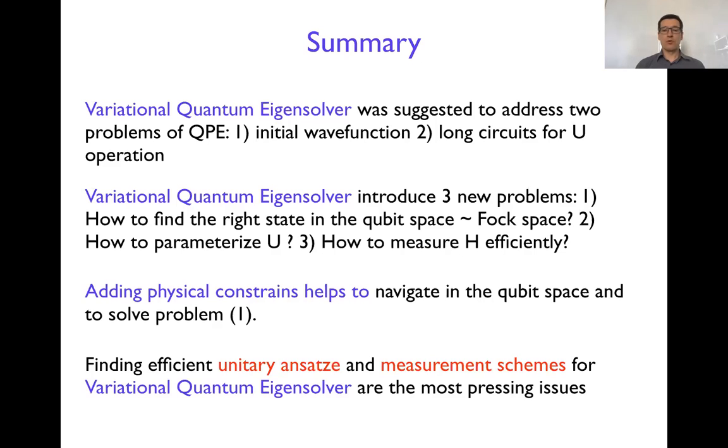So adding physical constraint helps to navigate the qubit space and solve problem number one in this three. But finding efficient unitary ansatz and measurement schemes for variational quantum eigensolver are the most pressing issues right now. And so they will be addressed in the next two lectures.